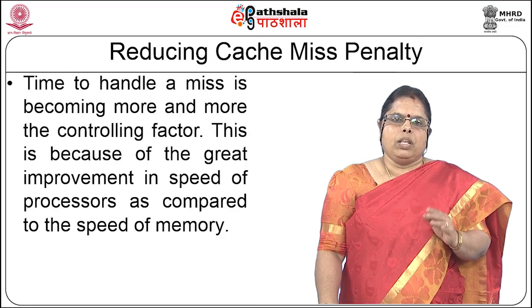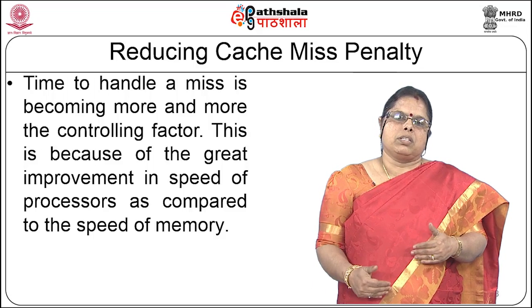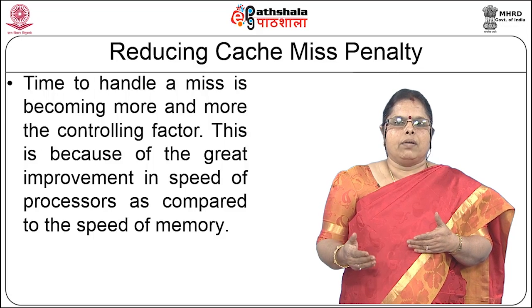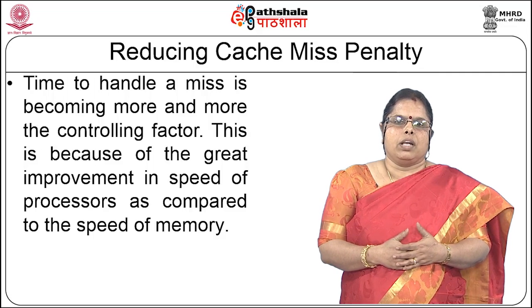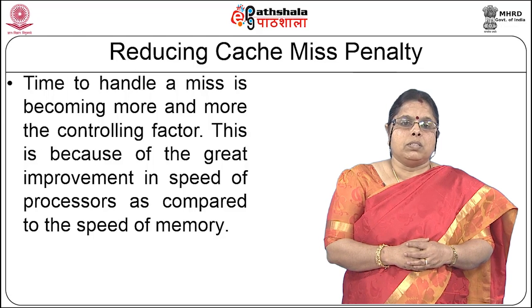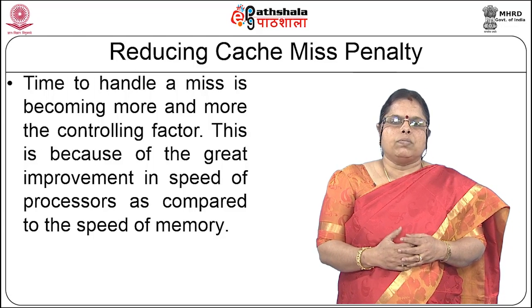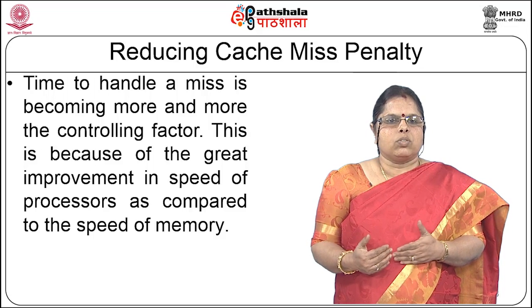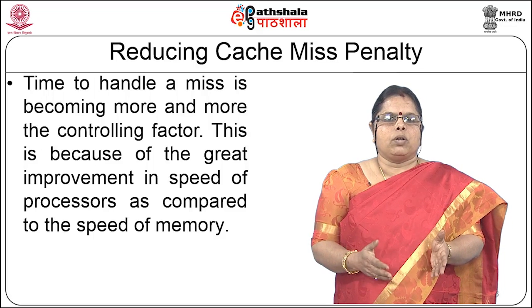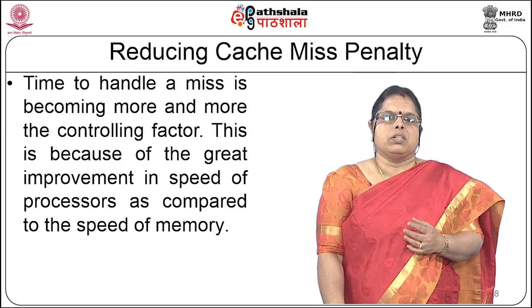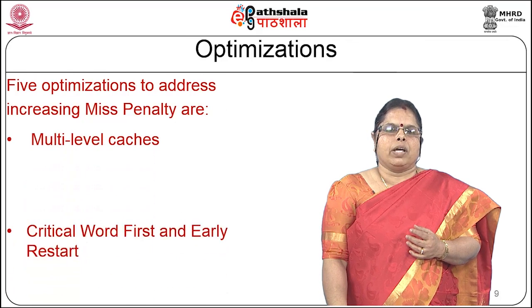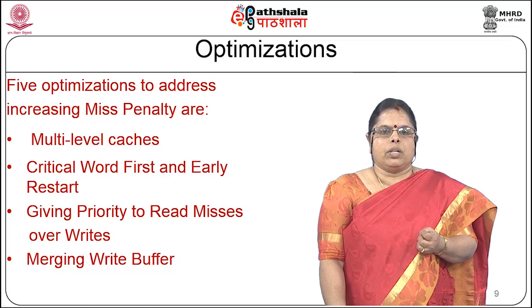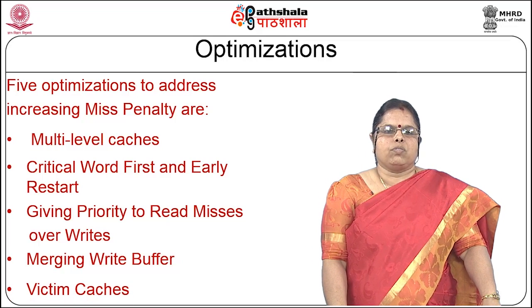First we look at the cache miss penalty — the various measures that can reduce it. The miss penalty is the time taken to get data from the lower level of memory and transfer it to the requested level and on to the processor. The time to handle a miss is becoming more and more the controlling factor because processor speed has improved greatly while memory has not kept pace, making memory access a bottleneck. We look at five optimizations addressing miss penalty: multi-level caches, critical word first and early restart, giving priority to reads over writes, merging write buffers, and victim caches.